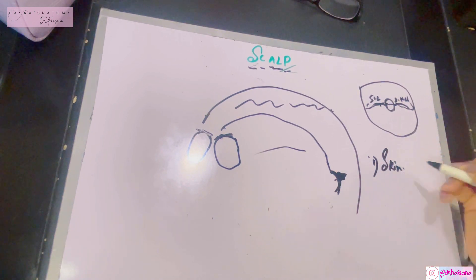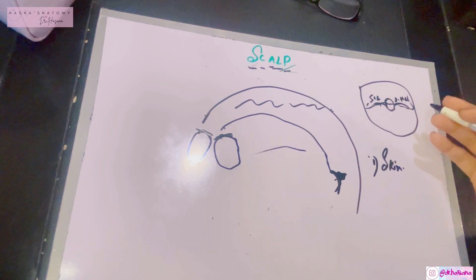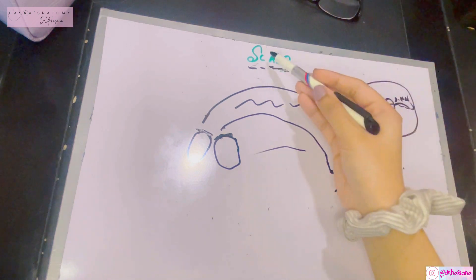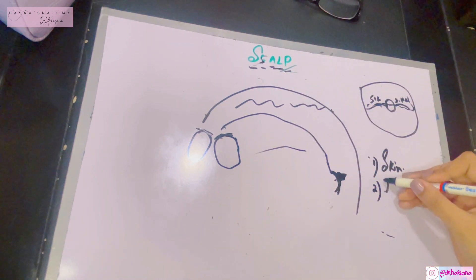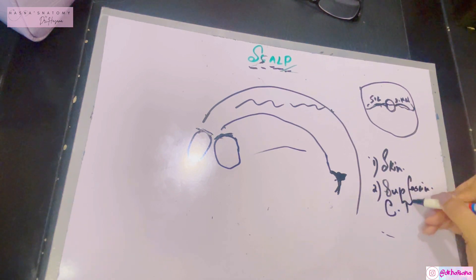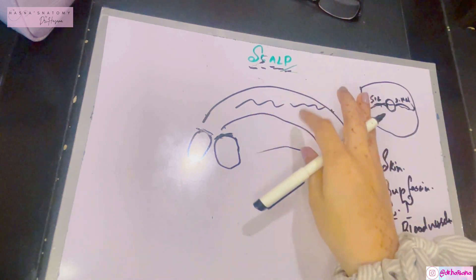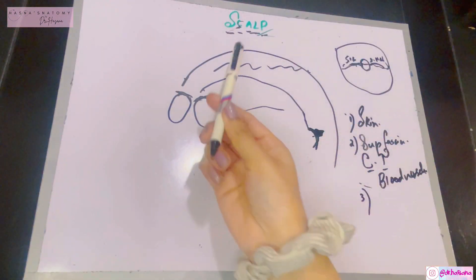The first layer is the Skin. The skin consists of hair, is very thick, and has multiple sweat glands and sebaceous glands — which is why many sebaceous cysts occur in the scalp. After the skin comes the Connective tissue, which is the superficial fascia. This connective tissue has many blood vessels, so wounds of the scalp result in massive, profuse bleeding.